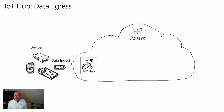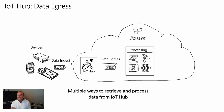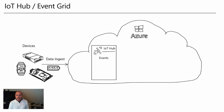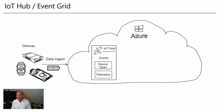Today we want to talk about data egress — that means data which is already ingested into IoT Hub and how we can get this data out of IoT Hub. There are multiple ways to retrieve and process data from IoT Hub. In this session specifically, we want to talk about the eventing capabilities of IoT Hub. There are two categories IoT Hub can send events to other services. One category is telemetry — the incoming data and payload from the devices.